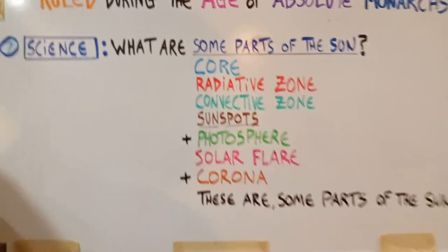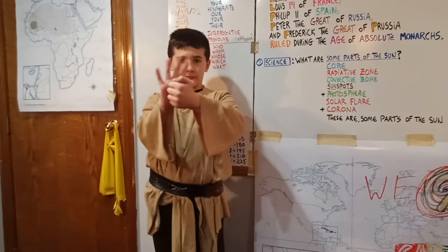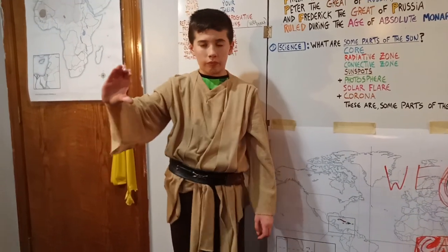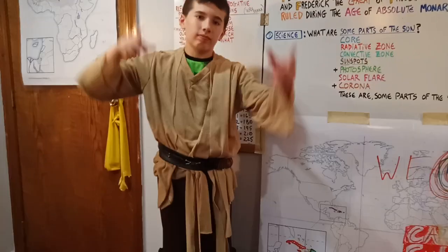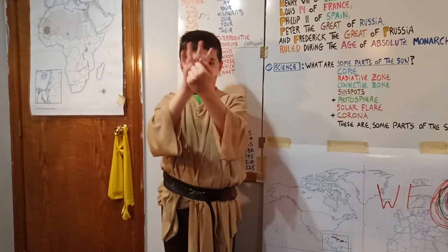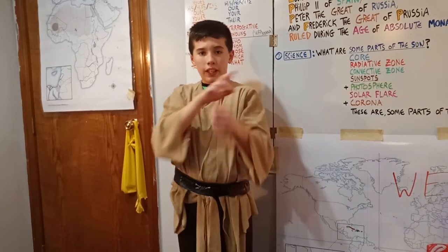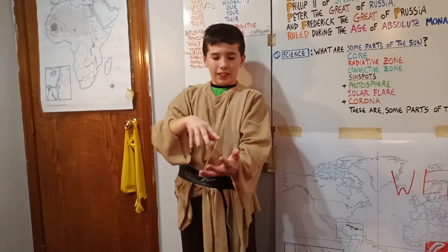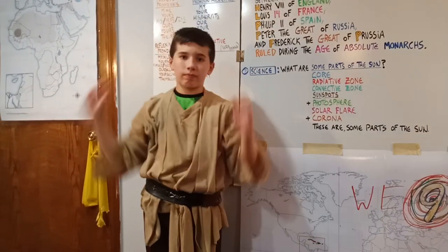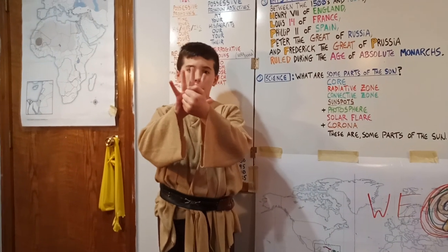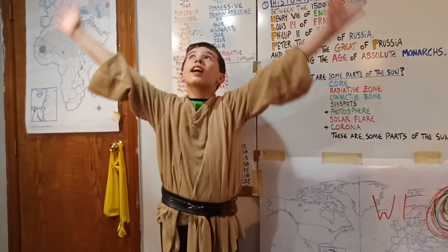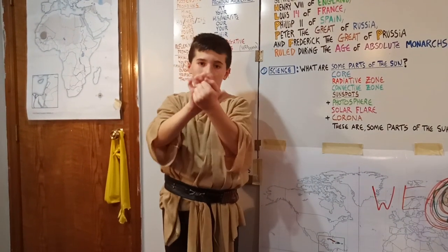And last, our science question: what are some parts of the sun? We're going to leave the core behind, then make an R for radiative zone, then a C for convective zone. Then we're going to shoot down some sunspots. We're going to take a picture for photosphere and solar flare, and then corona. To the song of You Are My Sunshine — some parts of the sun are core, radiative zone, convective zone, sunspots, photosphere, solar flare, corona. These are some parts of the sun.